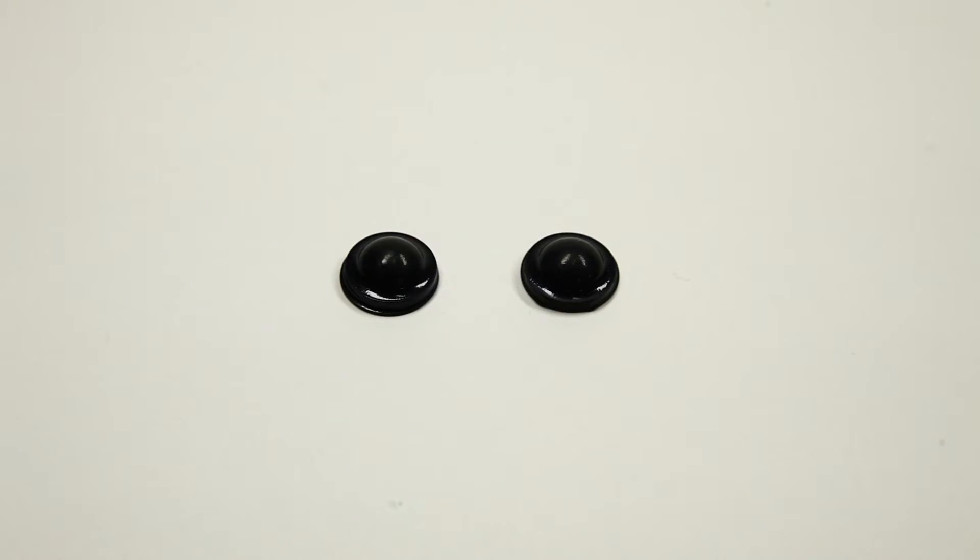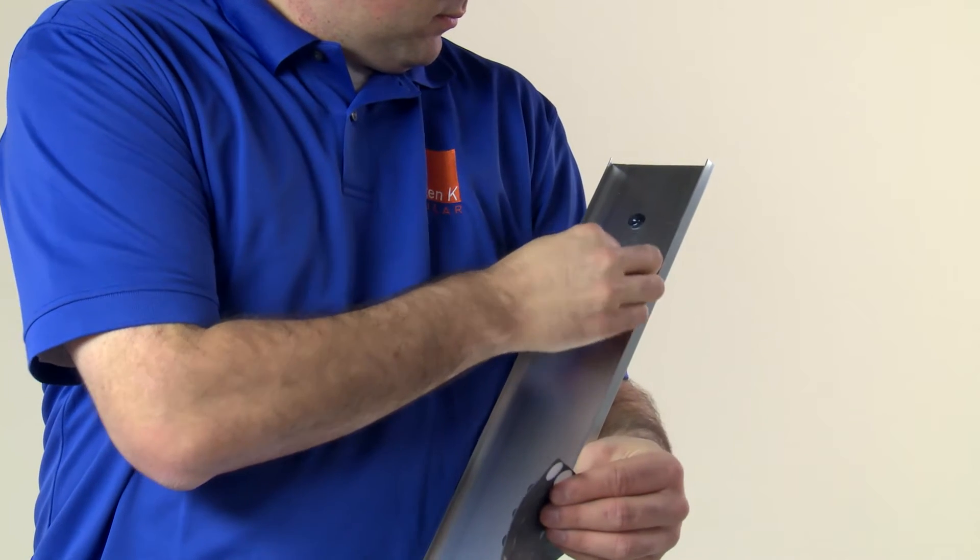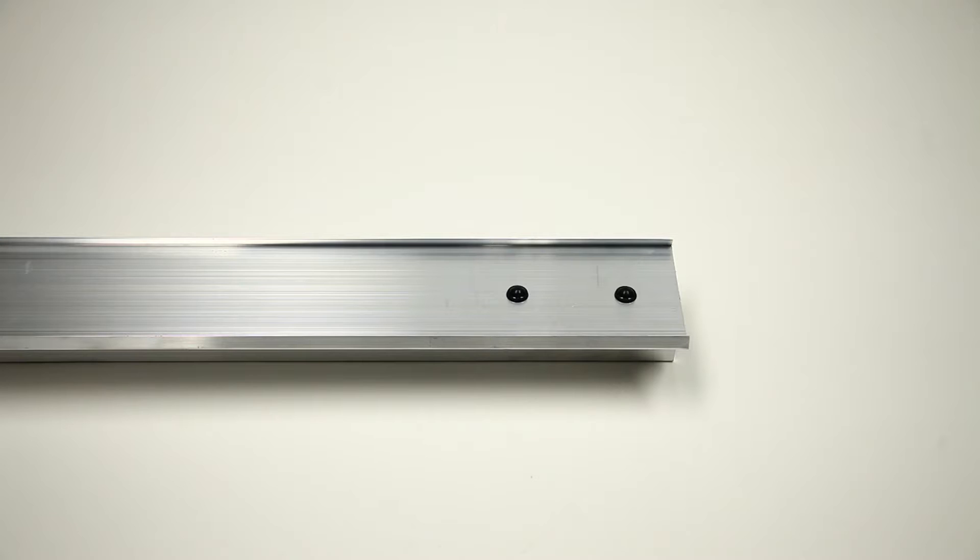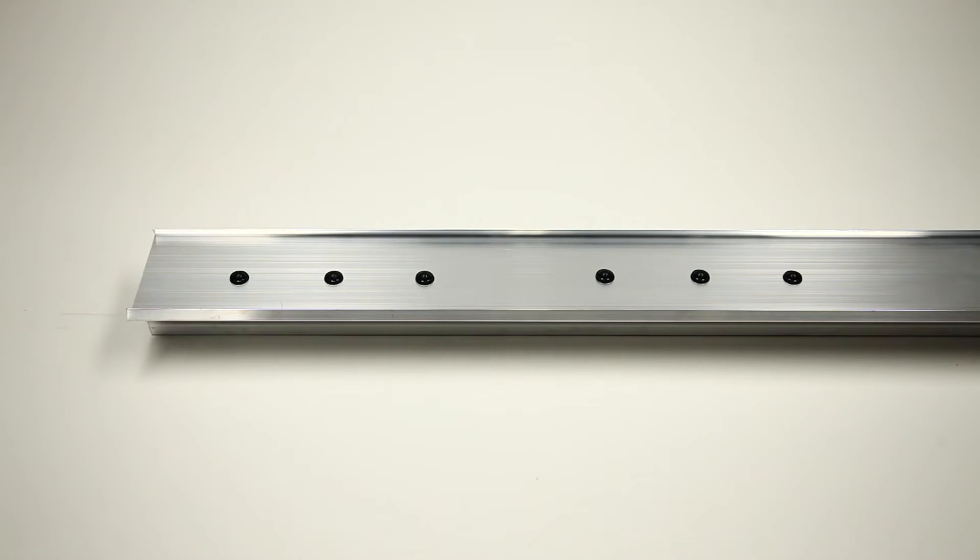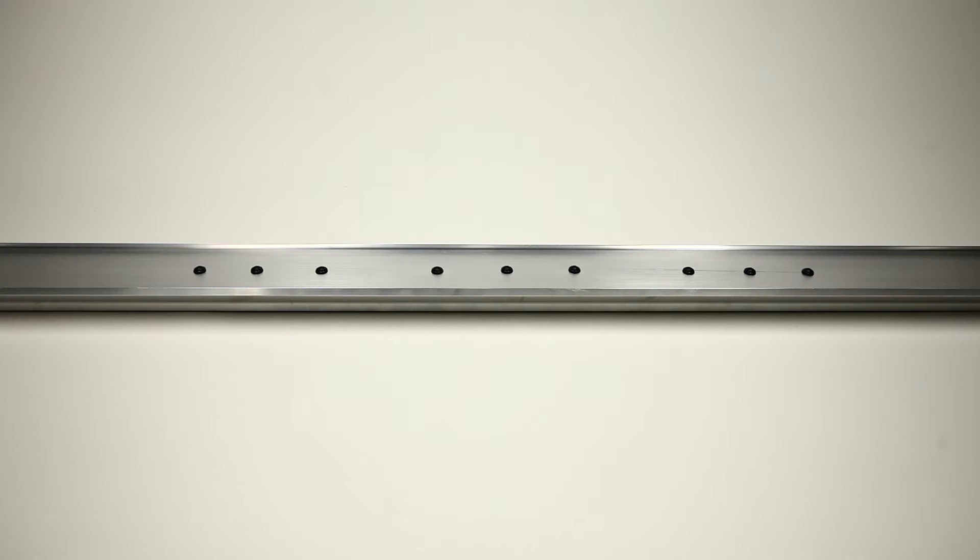Apply two of the supplied self-adhering rubber bump-ons to the bottom end of each long rail and to one end of each short rail. Apply two sets of three bump-ons to the other end of the short rail, and three sets of three bump-ons to the middle of the long rail.